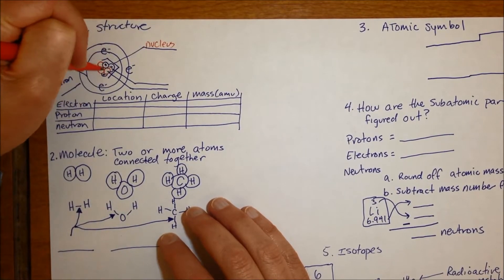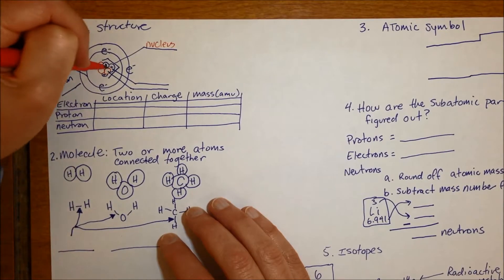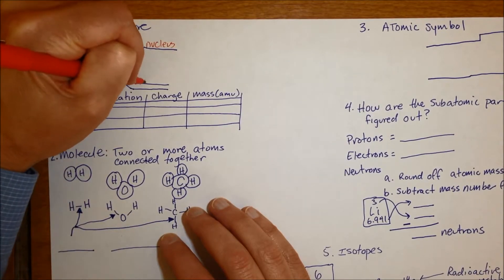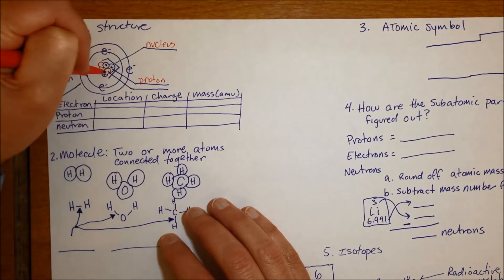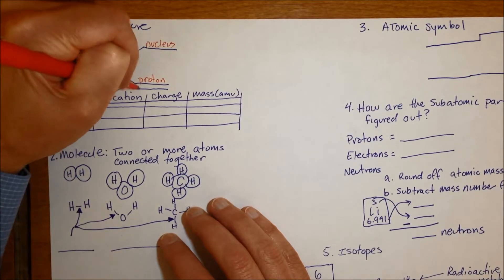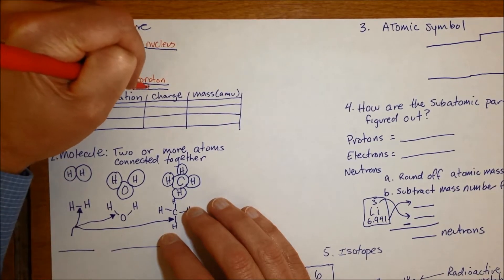It's called the nucleus, and there's two types of subatomic particles in the nucleus. You have the positively charged protons and the neutral neutrons.